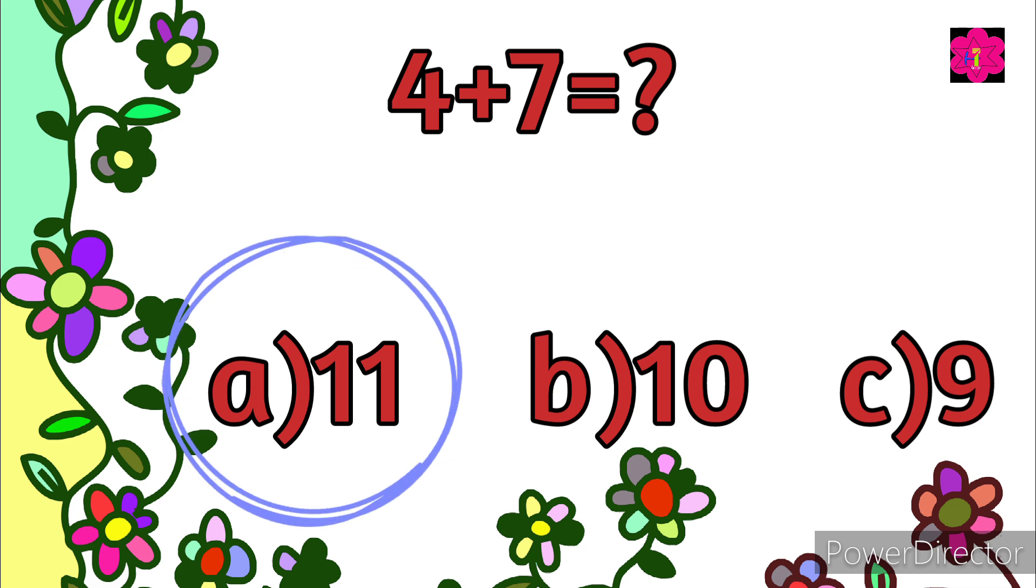Good kids, correct answer is 11. 4 plus 7 is equal to 11.